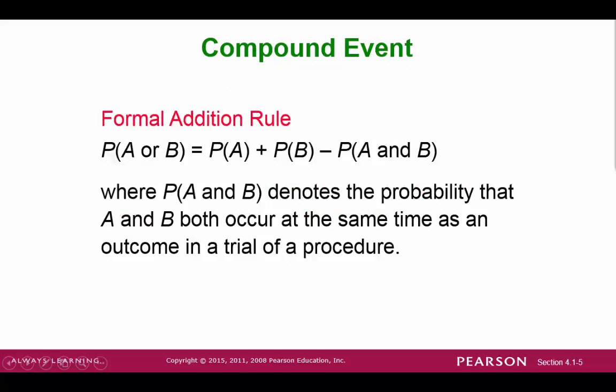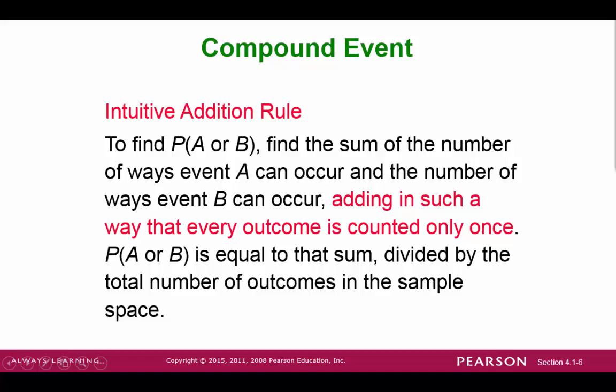The addition rule is as follows. The probability of A or B happening is equal to the probability of A plus the probability of B. But if there is some overlap, we need to subtract out the duplicate — the probability of A and B — to make sure we don't count anything more than once.